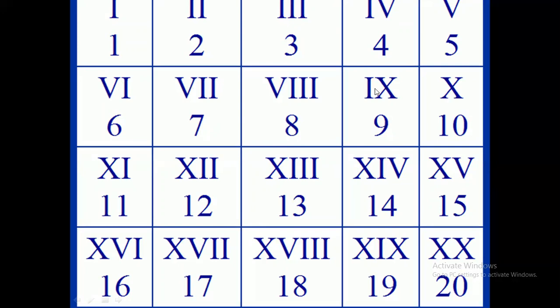And when the smaller number is on the left-hand side, we subtract. 10 minus 1 will give you 9. X stands for 10. But XI, smaller number is on the right-hand side, 10 plus 1 is 11. 10 plus 2 is 12. 10 plus 3 is 13.